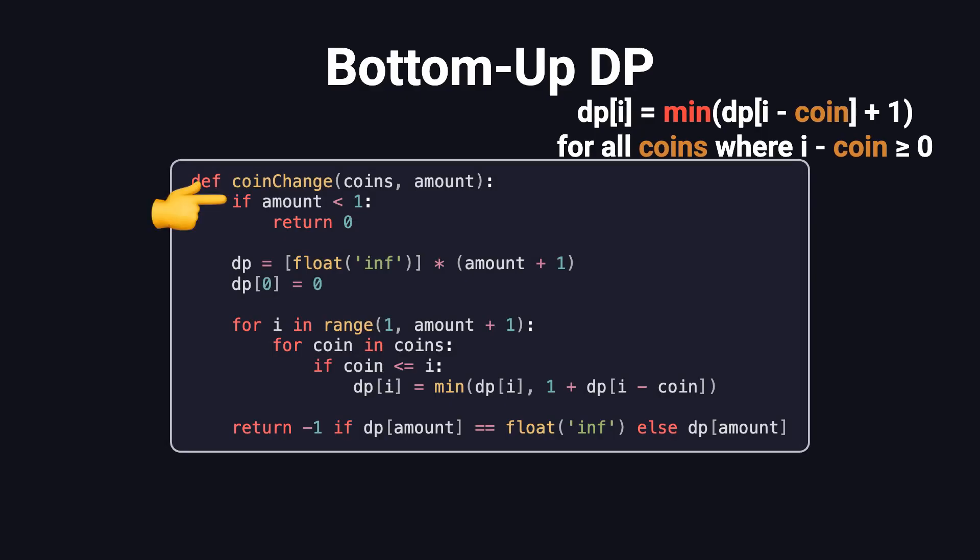First, if the amount is less than 1, just return 0. Then, create a dp array of length amount plus 1. Set every entry to infinity, except dp[0] equals 0. Now, loop from 1 to the target amount. For each value of i, go through all the coin denominations. If the coin is less than or equal to i, try using that coin, and update dp[i] by checking dp[i minus coin] plus 1. Finally, check if dp[amount] is still infinity. If so, return minus 1. Otherwise, return dp[amount].